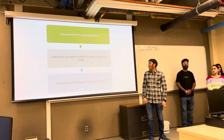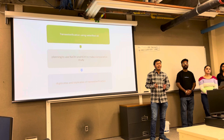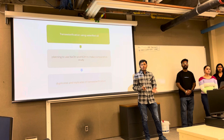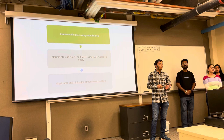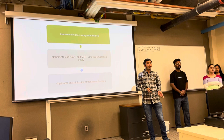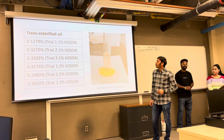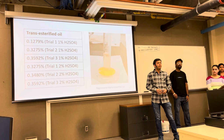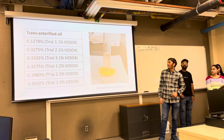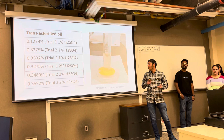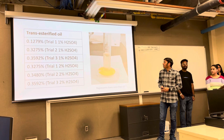For that, we did transesterification of the esterified oil. Our initial plan was to use both NaOH and KOH as catalysts, but from literature we found we would get similar results for both, so we only performed transesterification with NaOH — in duplicates and triplicates. After that we got 0.1% in trial 1, 0.3% in trial 2, and 0.3% in trial 3. We significantly reduced the free fatty acid content. Even with 2% H2SO4, we reduced it to nearly 0.3% — down from 3.3%. We were on track.